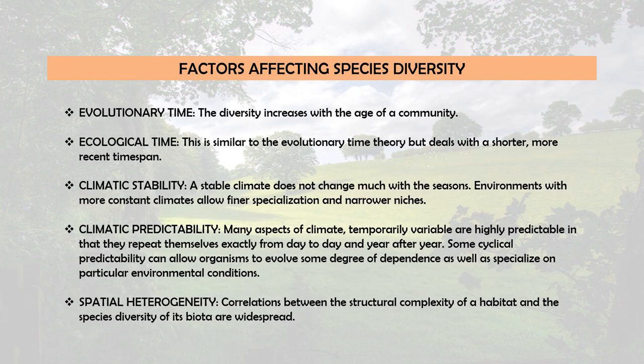There are several factors that affect species diversity. The first is evolutionary time. This theory assumes that diversity increases with the age of a community. Temperate habitats are considered impoverished in species because their component species have not had enough time to adapt to or completely occupy their environment. In contrast, more mature tropical communities are more diverse because there has been a longer period without major disturbances for organisms to diversify.